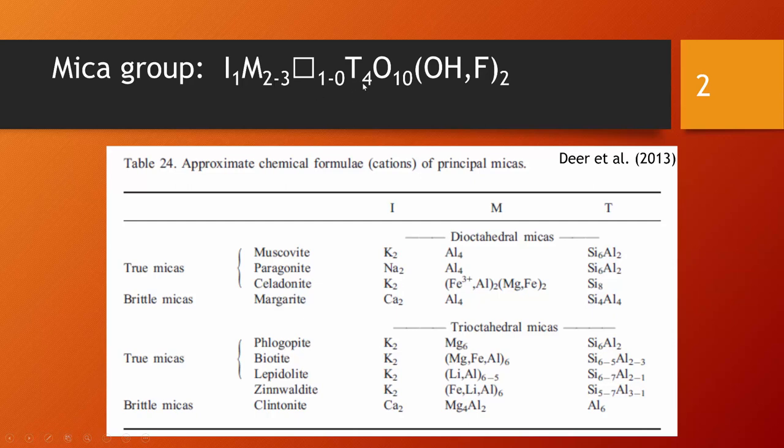Then there's a tetrahedron. In the tetrahedral position, we have four ions and then there are 10 oxygens and two hydroxyl or fluorine anions. Very commonly, this structural formula is represented in a duplicated form so that we have two ions on the I position, four to six on the M position, and accordingly zero to two vacancies on that M position. That also then makes eight cations on the tetrahedral position, 20 oxygens, and four OH or F.